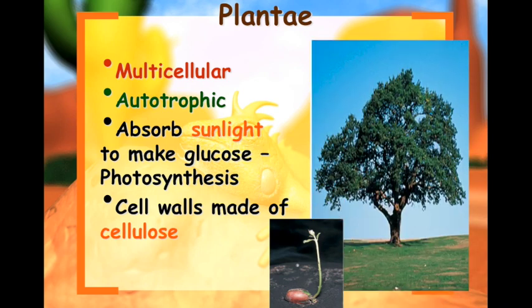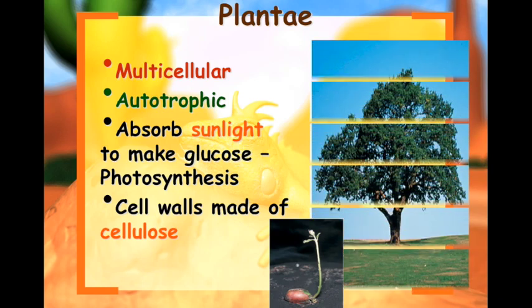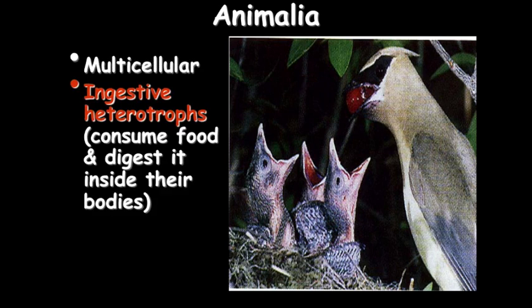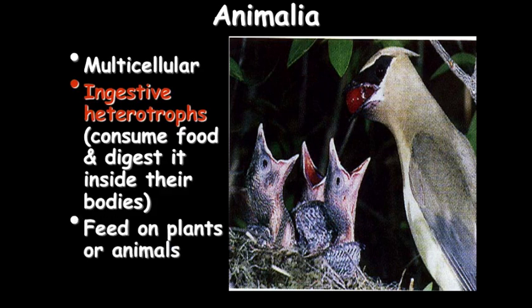Plantae: most of us know what plants are — multicellular, autotrophic, they absorb sunlight to make glucose through the process of photosynthesis. Cell walls are made of cellulose, and we cannot digest cellulose. Animalia: we belong to this category — multicellular, ingestive heterotrophs, which means we have to consume food and digest it inside our bodies. We feed on plants and animals.